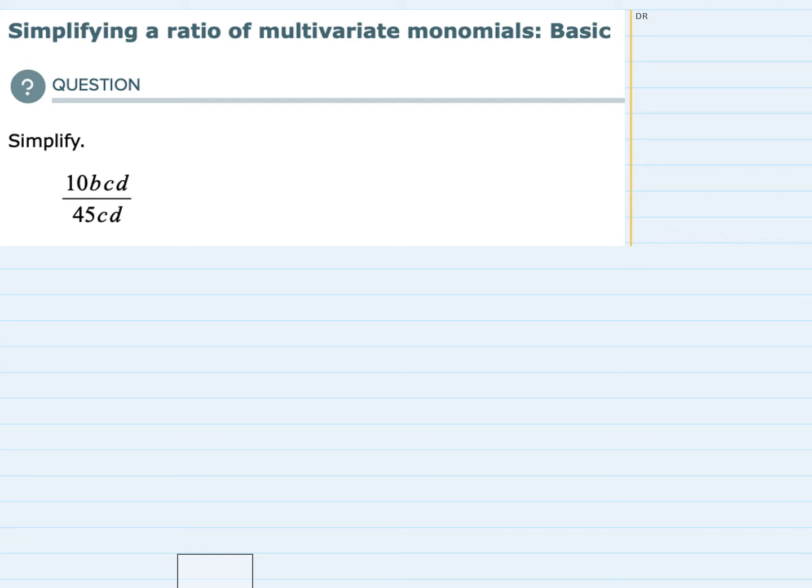To simplify this I'm going to work through what's similar in the top and the bottom, first starting with this numerical part. I have a 10 and a 45. I know that as a fraction 10 over 45 I can simplify that because they're both divisible by 5. So 5 would go into 10 twice and 5 would go into 45 nine times. That simplifies to a 2 in the numerator and a 9 in the denominator.